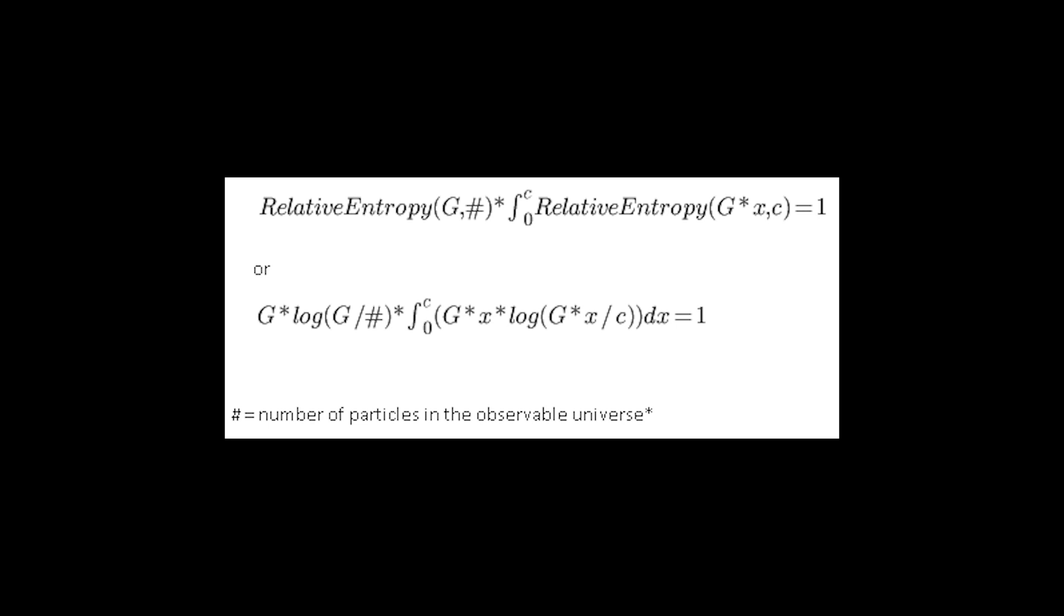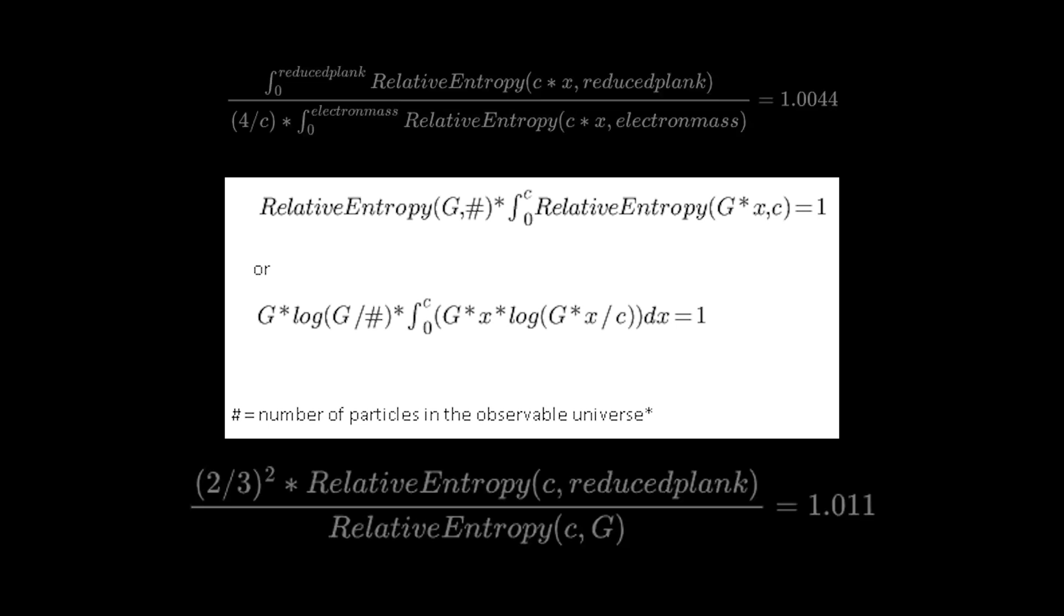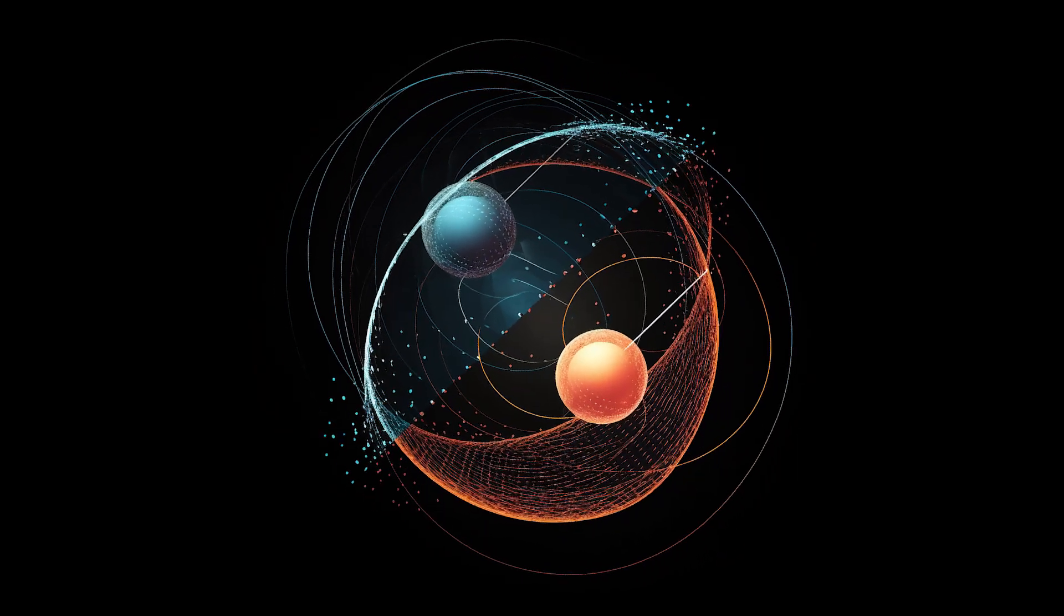The following is one of three entropy conservation equations I've discovered correlating the physical constants, based on a theory of relative momentum I've been working on for a few years.